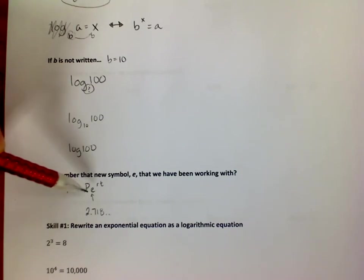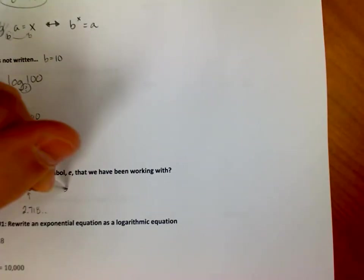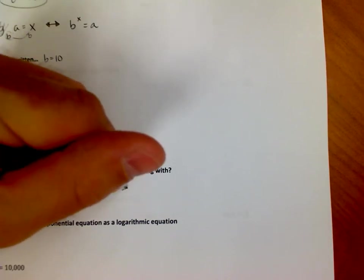This thing shows up so often that we have its own symbol. Well it turns out that it happens so often it also has its own special logarithm and that's called, by the way e is called, since I haven't introduced this, e is called the natural number.